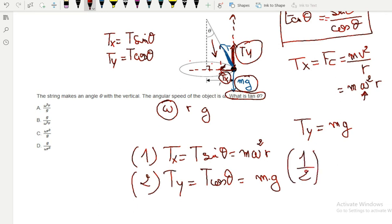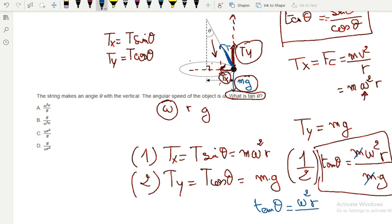I'm going to have M omega squared times R divided by M times G. Dividing equation 1 by 2 gives tangent. M cancels out and I end up with tangent theta equals omega squared times R divided by G.